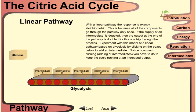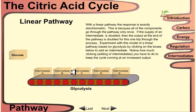With a linear pathway, the response is exactly stoichiometric because all components go through the pathway only once. If the supply of an intermediate is doubled, then the output at the end of the pathway is doubled for that one trip through the process.